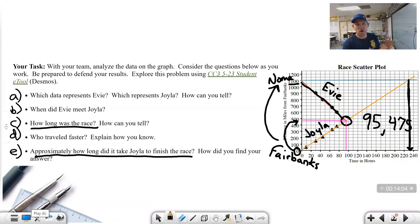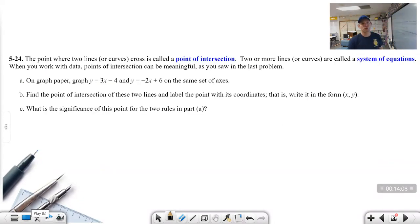How did I find my answer? I continued Joila's line until she crossed the finish line at 1,100 miles. Where that line crosses, I went down to the X value, 230 hours. This is a real-life situation where we are trying to predict the future. That's the purpose of this exercise: predicting the future. Where are they going to meet? Where are they going to cross? Where are they going to be the same? But not all the problems are this involved.